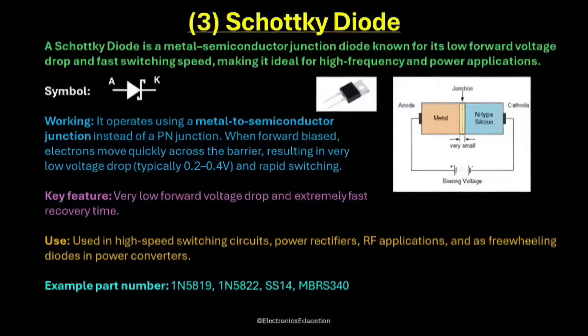Each of these is designed for specific voltage and current ratings, depending on the power level of the circuit. In summary, the Schottky diode is preferred wherever high-speed operation and low power loss are needed. It is efficient, reliable, and essential in modern electronics, especially in switching power supplies, RF circuits, and converters. Its combination of low voltage drop and fast switching response makes it a key component in energy-efficient electronic design.